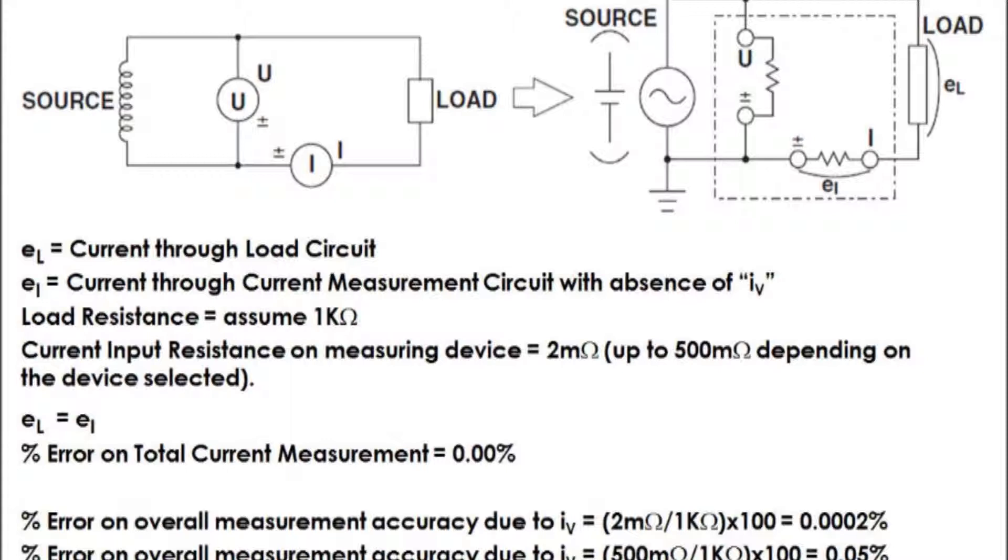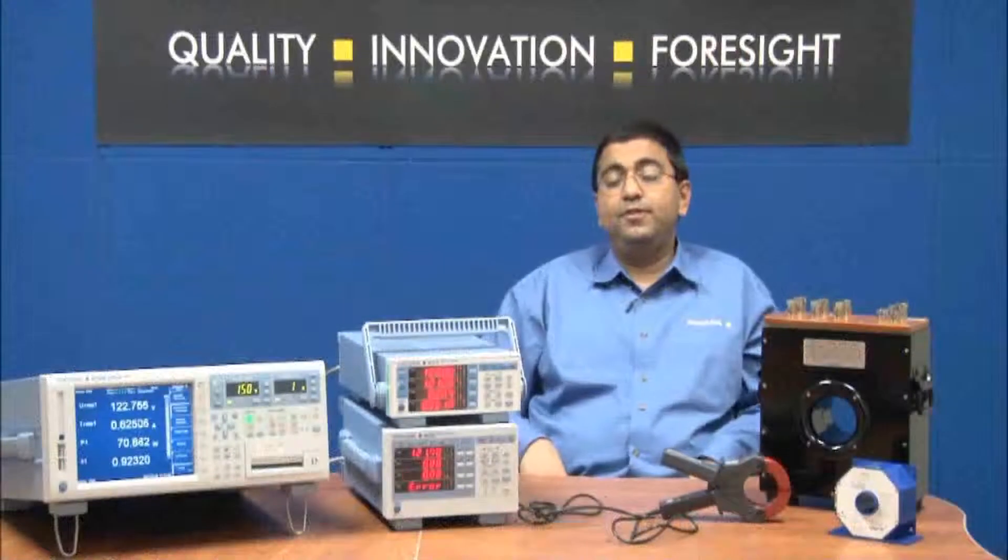You may argue that this arrangement could affect the voltage measurement and in turn could also affect the overall accuracy. Well, not much. On Yokogawa power analyzers, the input resistance of the current measuring device is very low. The input resistances range from 2 milliohms to 500 milliohms depending on the device selected. So the voltage drop across this resistor would be very small and the effect on the overall accuracy would be minimal.